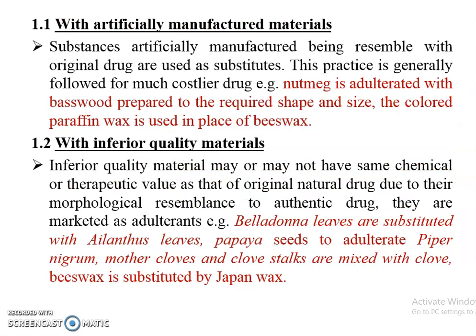With artificially manufactured material: these are substances artificially manufactured to resemble the original drug and are used as substitutes. This practice is generally followed for much costlier drugs. For example, nutmeg is adulterated with passwood carved to the required shape and size, and colored paraffin wax is used in place of beeswax. With inferior quality materials: inferior quality materials may or may not have the same chemical or therapeutic value as the original natural drug due to their morphological resemblance to the authentic drug. They are marketed as adulterants. For example, belladonna leaves are substituted with elecanthus leaves, and papaya seeds are used to adulterate piper nigrum.